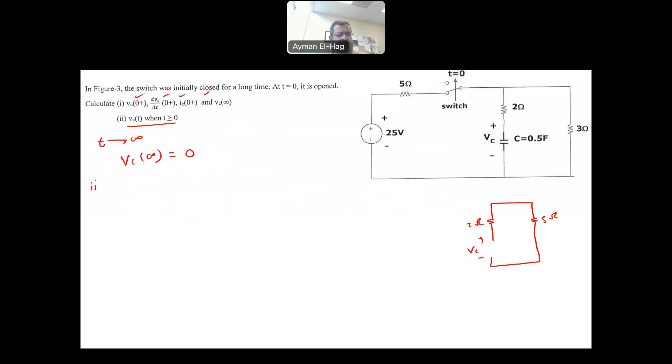Find in part 2, we need to find VC of T. Now, VC of T, always we assume the answer in that format: K1 plus K2 E minus T over tau. And based on the conditions that we have, we can find all of these conditions. At VC at infinity is equal to zero. So it means that your K1 is basically equal to zero. Because when T goes to infinity, this item will go to infinity. So your K1 basically is equal to zero. So we found K1.